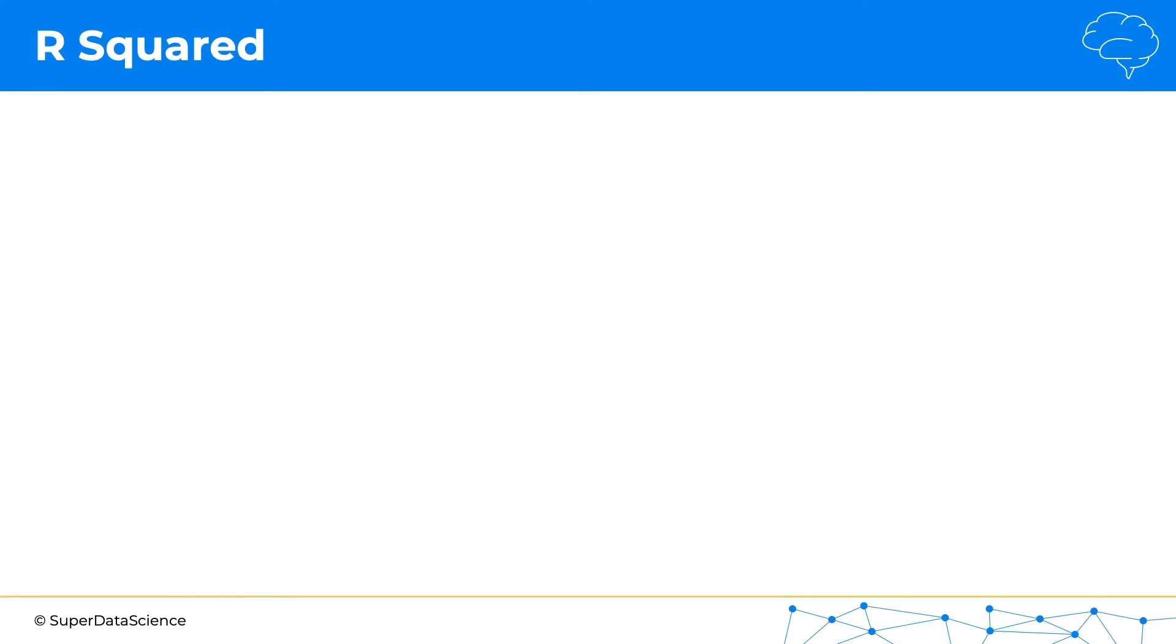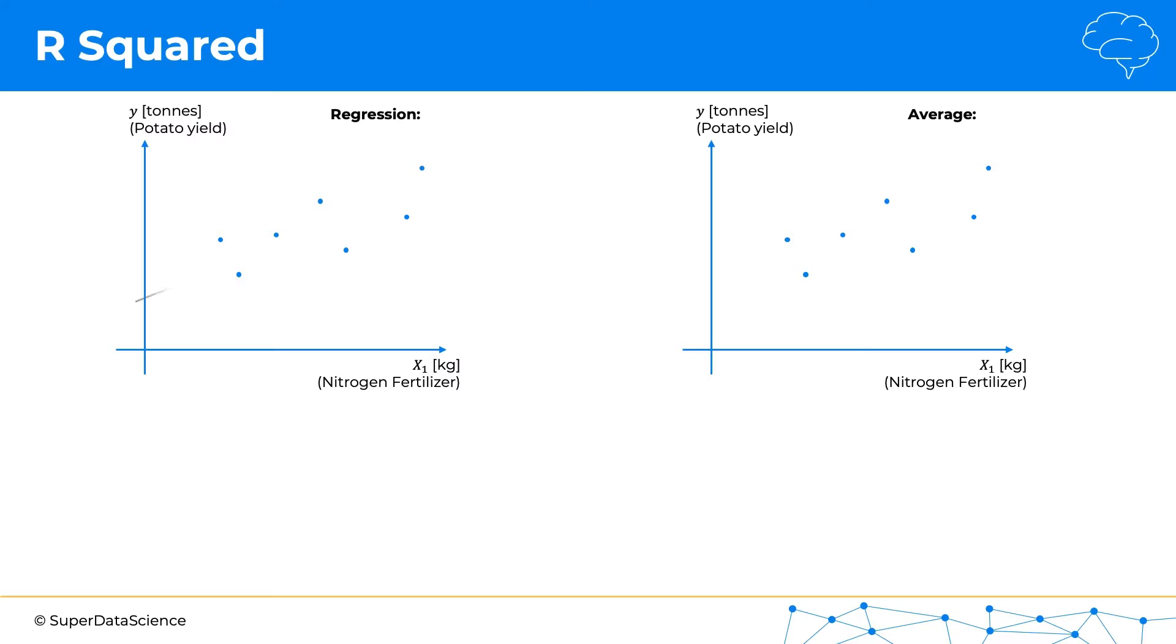So here is our data set, and what we're going to do here is plot the regression as we were doing before. And here's our data set again, and this time we're going to just plot an average line, and we'll see that in a second.